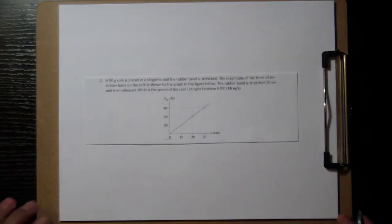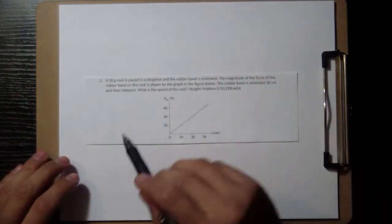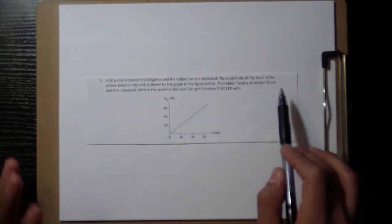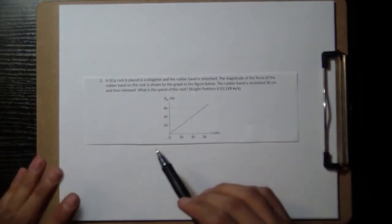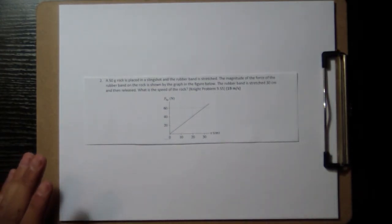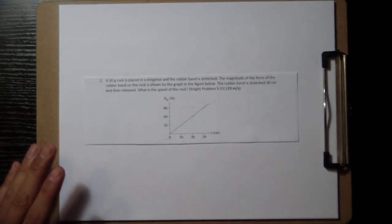Alright, let's look at problem number two. A 50 gram rock is placed in a slingshot and the rubber band is stretched. The magnitude of the force of the rubber band on the rock is shown by the graph in the figure below. The rubber band is stretched 30 centimeters and then released. What is the speed of the rock?